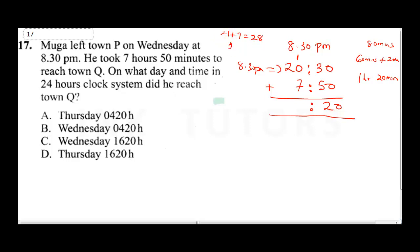Since we got 28 hours, and we don't have a 28-hour clock system, once you pass 24, that becomes 00:00 of the next day. So 28 minus 24 gives us 4, meaning the time is 04:20. Since he left on Wednesday, he arrives on Thursday. The correct answer is A.